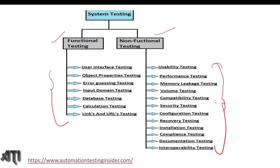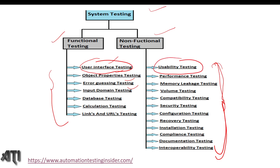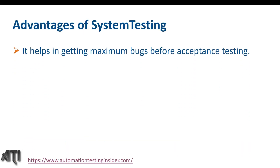I have already created a video on the testing hierarchy where I explained in brief all these testing types — user interface testing, object properties, error guessing, input domain, and others. I'll provide the link in the description box. This diagram is part of that testing hierarchy. I have also spoken about non-functional testing in brief, and in coming days I'll explain each type of testing in a separate video with examples.